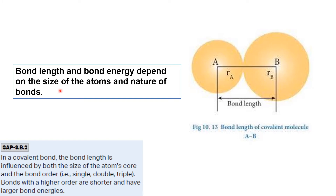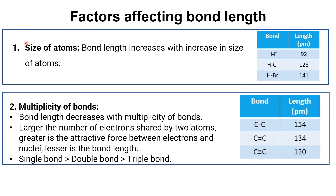Bond length and bond energy both depend on the size of atoms and the nature of the bonds. To calculate bond length for two atoms, we add the radius of the first atom plus the radius of the second atom. For factors affecting bond length — first, atom size: comparing HF, HCl, and HBr, as we go from fluorine to bromine the atomic size increases, so the atom is farther away from the other atom and bond length increases.